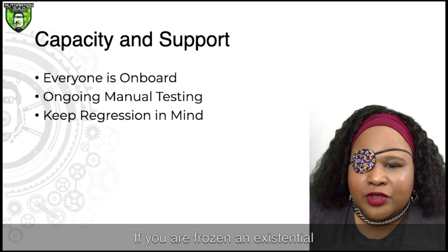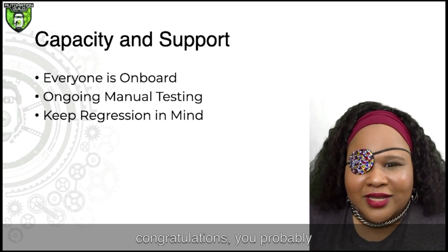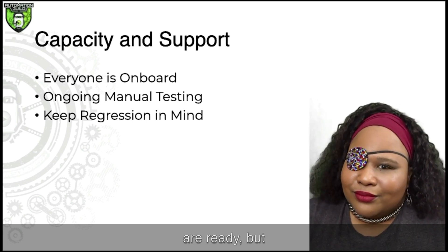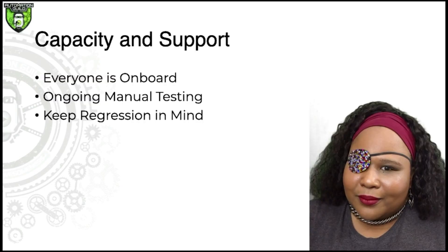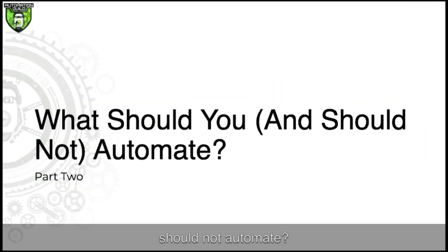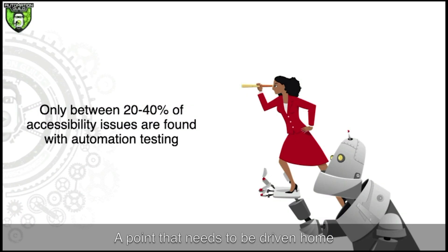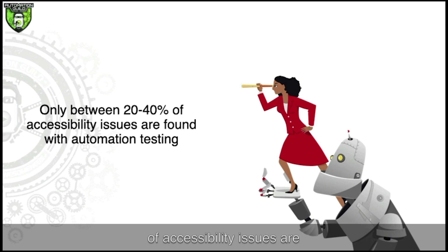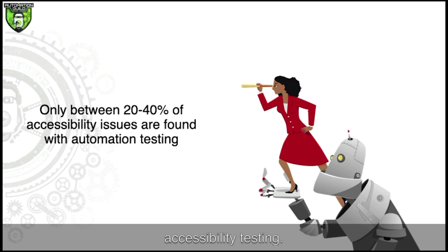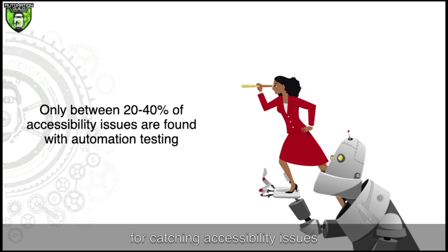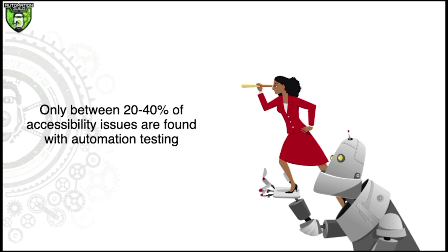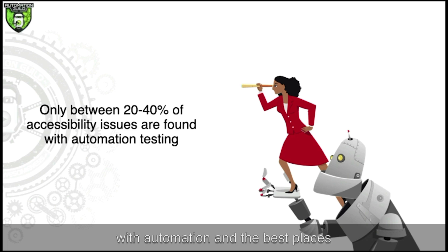If you aren't frozen in existential dread after considering what goes into being automation ready, congratulations — you probably are ready. Part 2: what should you and should not automate. A point that needs to be driven home regarding accessibility automation is that it will not find everything. Most accessibility experts agree that between 20 and 40% of accessibility issues are found with automation testing. Combining manual and automation is a balanced and holistic approach to accessibility testing, but manual testing is unavoidable for catching accessibility issues that automation cannot detect.